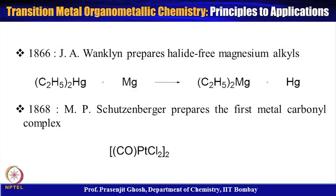In 1866, J.A. Wanklyn prepared halide-free magnesium alkyls by the reaction of diethyl mercury with magnesium, giving diethyl magnesium and mercury. This reaction opened up a new role for alkyl mercury as a transmetallation agent, and alkyl mercury has since been used in transmetallation reactions to prepare many transition metal organometallic compounds.